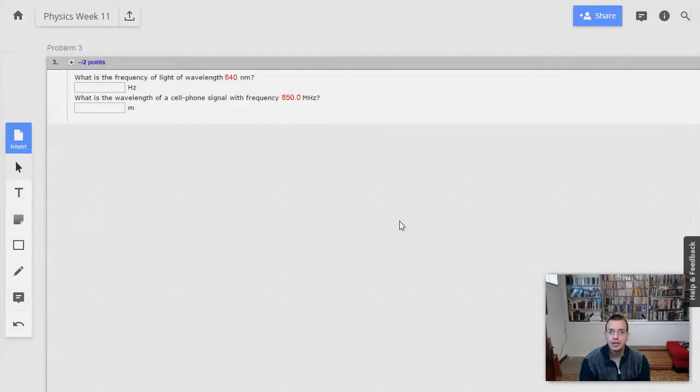Week 11, problem three. What is the frequency of light of wavelength 640 nanometers? What is the wavelength of a cell phone signal with a frequency of 850 megahertz? You can totally get this, not too bad.